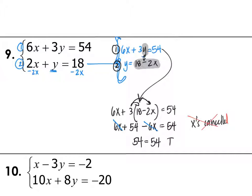So it's going to be a special case. It's either going to be no solution or infinite solutions. Since 54 does equal 54 is true, then this must be infinite solutions, which means these are the same line.